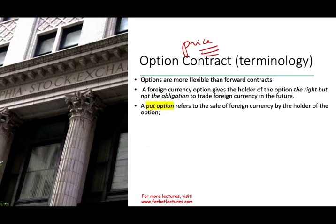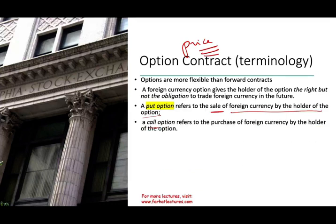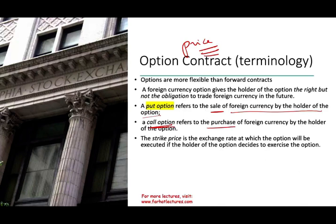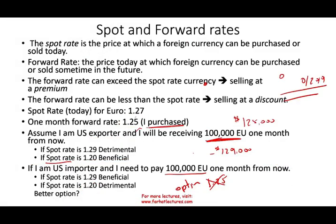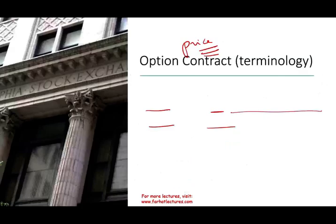We have two types of options. A put option refers to the sale of foreign currency by the holder of the option — you buy a put option when you are an exporter, because it gives you the right to sell the foreign currency at a particular rate. A call option refers to the purchase of foreign currency in the future — that's if you are an importer who has to pay a foreign company in their currency. There is also a strike price: the exchange rate at which the option will be executed if the holder decides to exercise it. For example, the strike price could be $1.25.